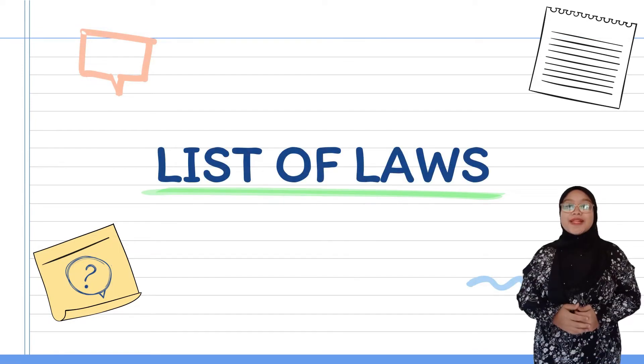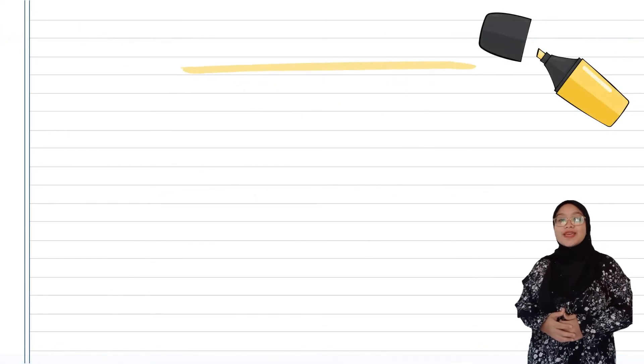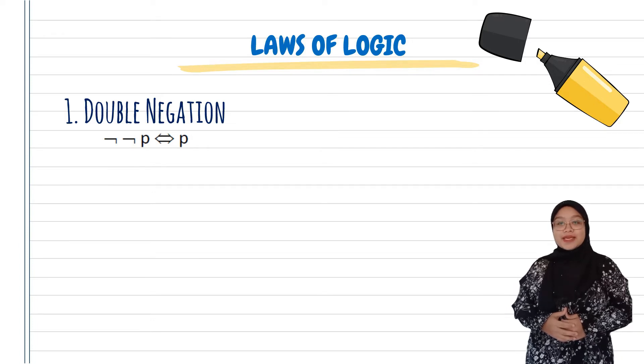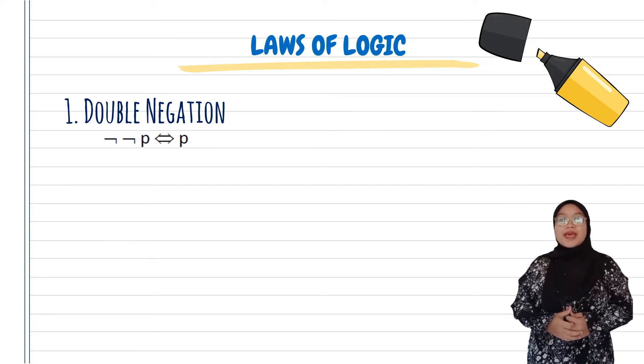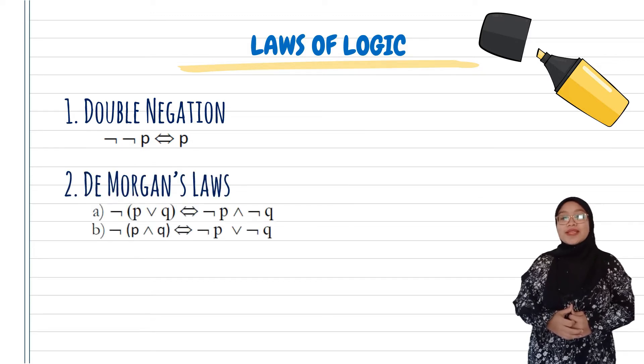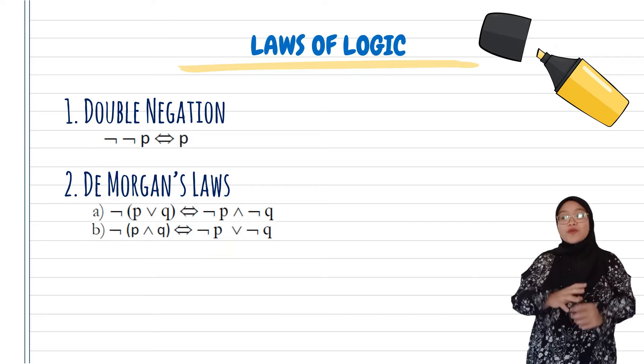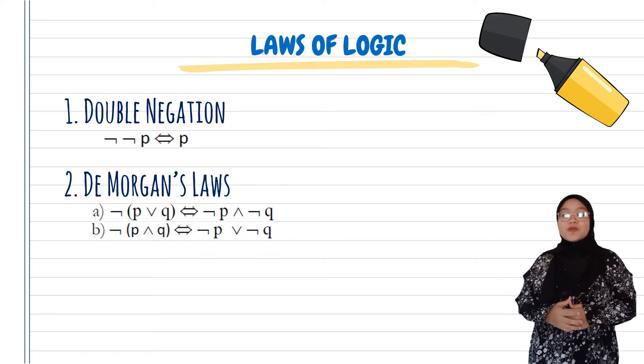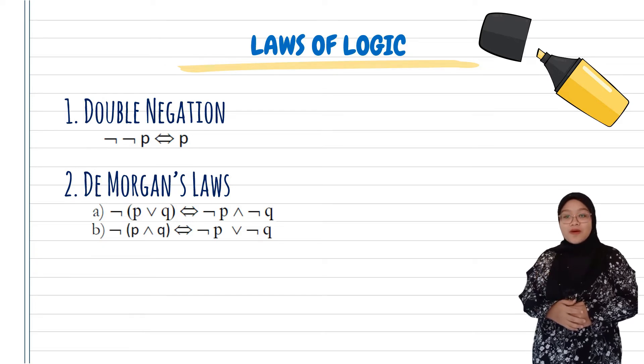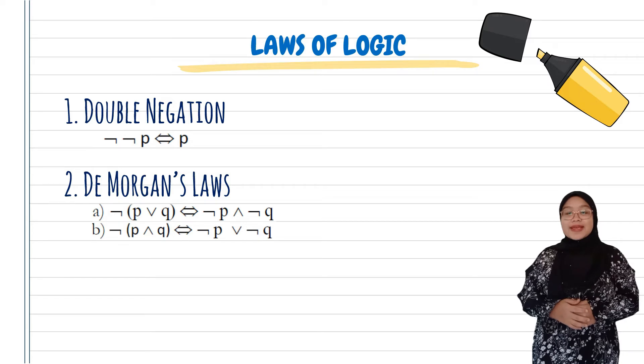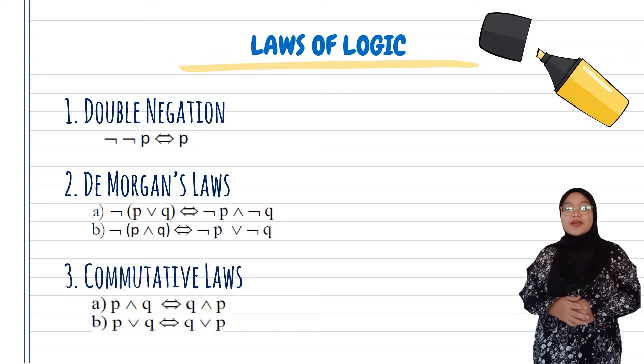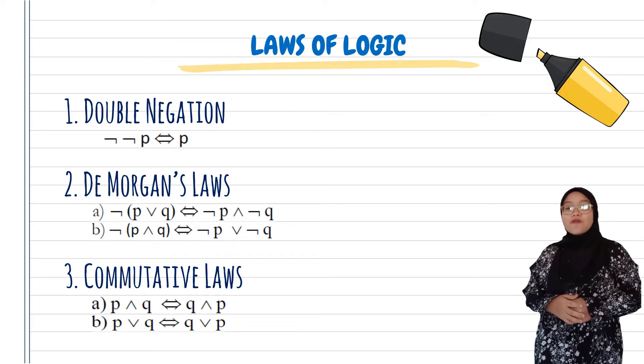So without further ado, let's know some laws of logic. First one we have Double Negation. For example, double negation of P should be equal to P. Next one we have De Morgan's Law. In De Morgan's Law, the negation is outside from the bracket, so if we negate, the changes will happen at the symbol. For example, the symbol AND will be OR, and the symbol OR will be AND. Next we have Commutative Law. In Commutative Law, it should be changes of the positions.